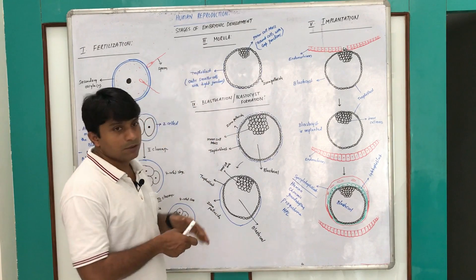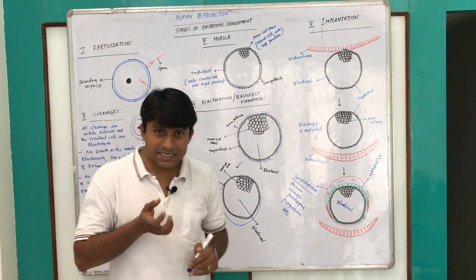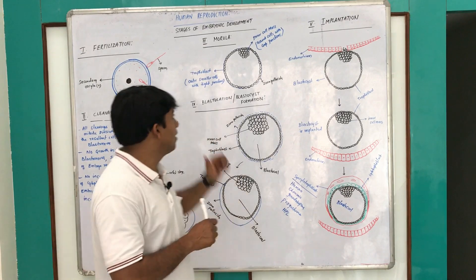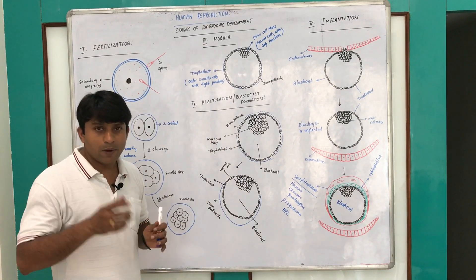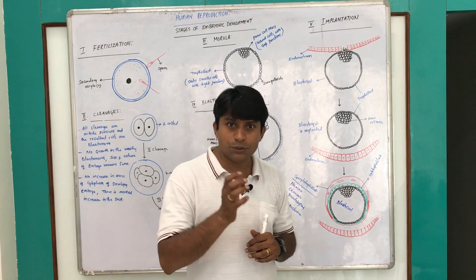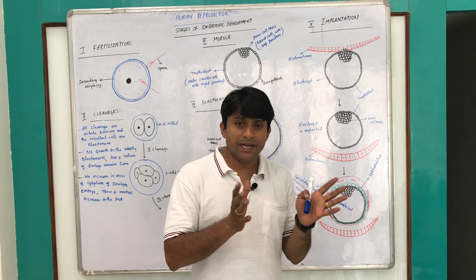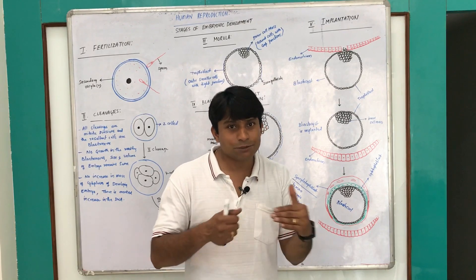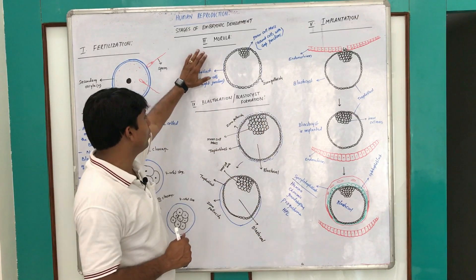Now the morula slowly descends into the uterus within four to six days after fertilization. Once the morula reaches the uterine cavity, it is exposed to a nutrient-enriched area, then the morula transforms into blastocyst.